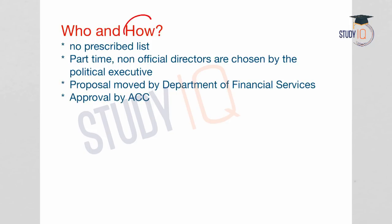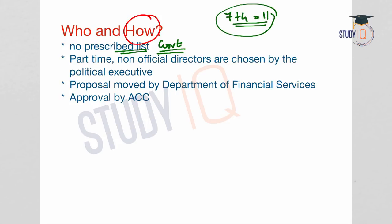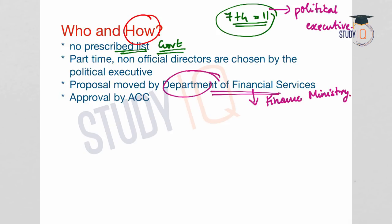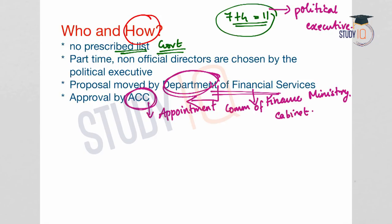Regarding how members are appointed: there is no prescribed list for the government to follow when nominating someone to the board. These non-official directors are chosen by the political executive. The proposal for appointment to the Central Board is moved by the Department of Financial Services, which comes under the Finance Ministry. This proposal has to be approved by the ACC — the Appointments Committee of the Cabinet.